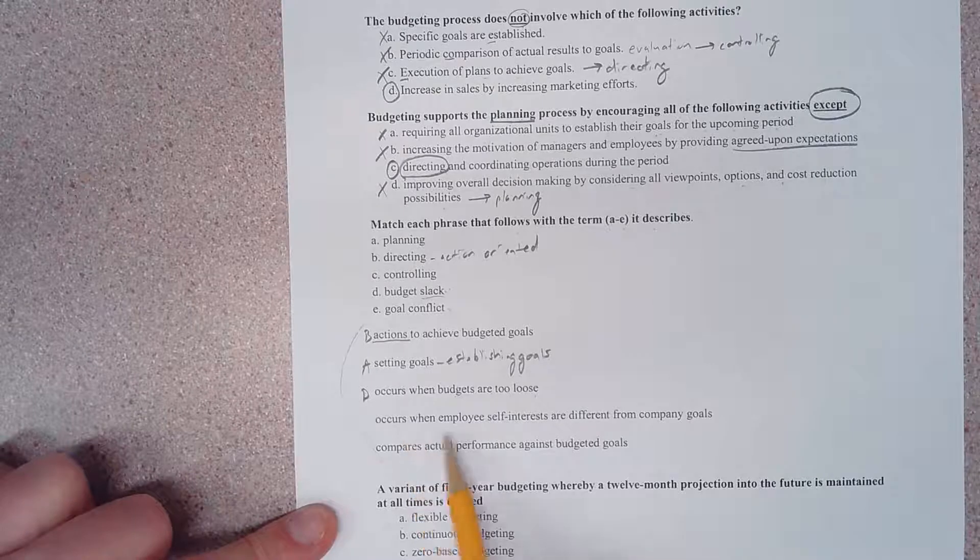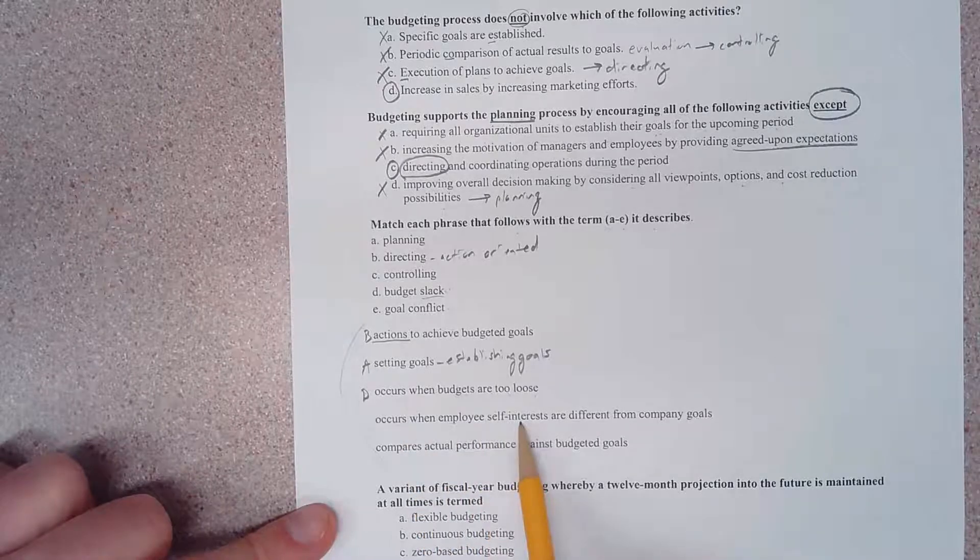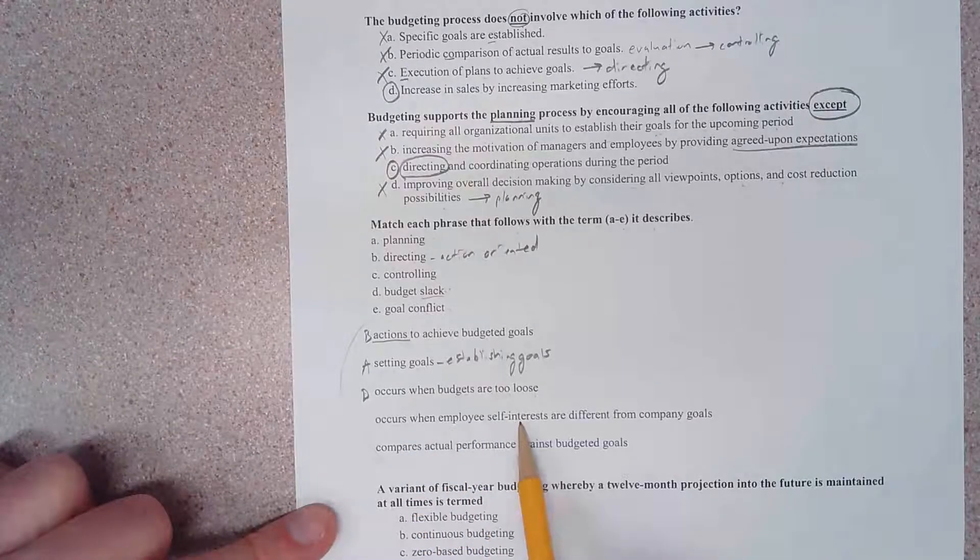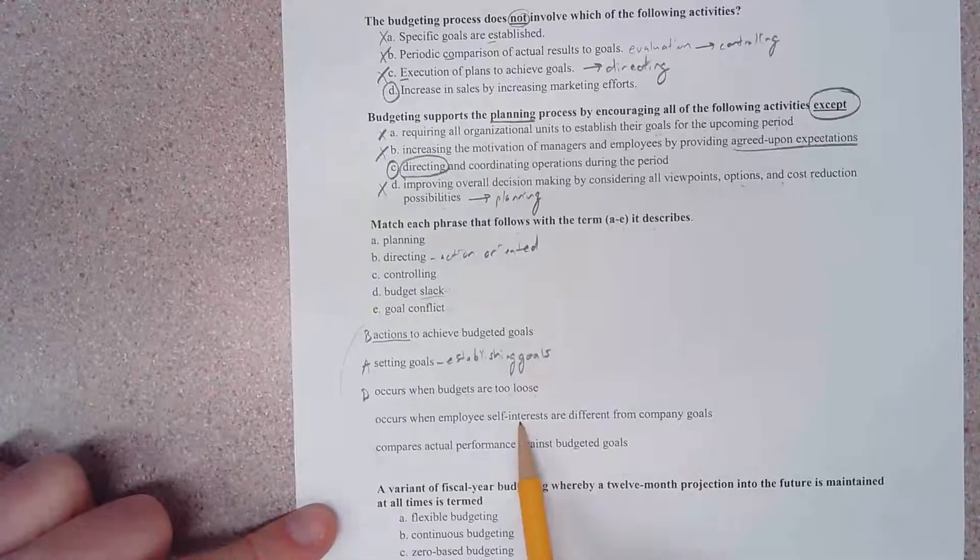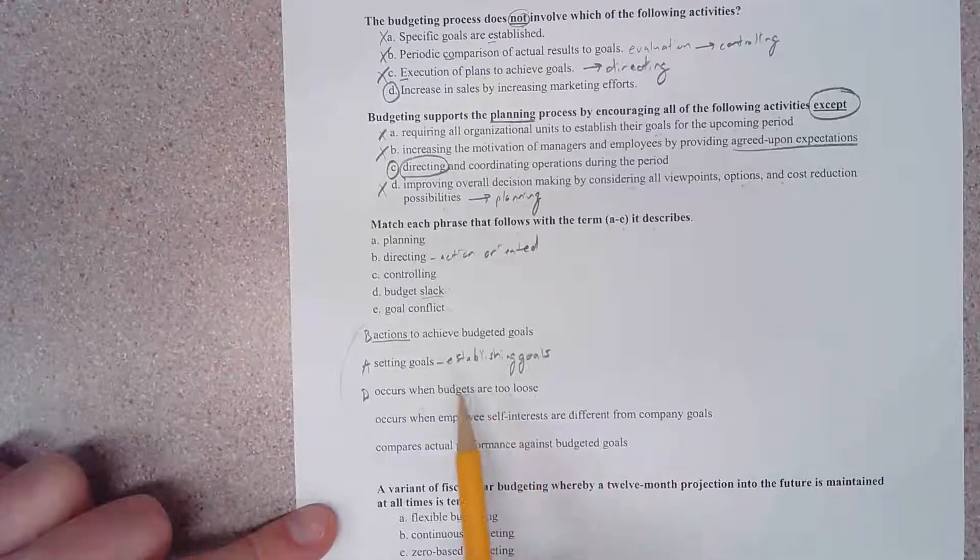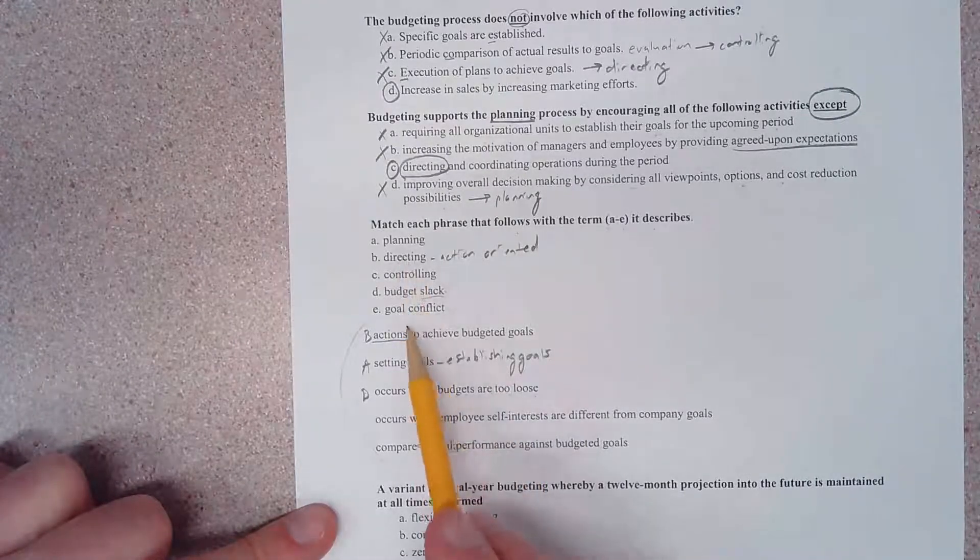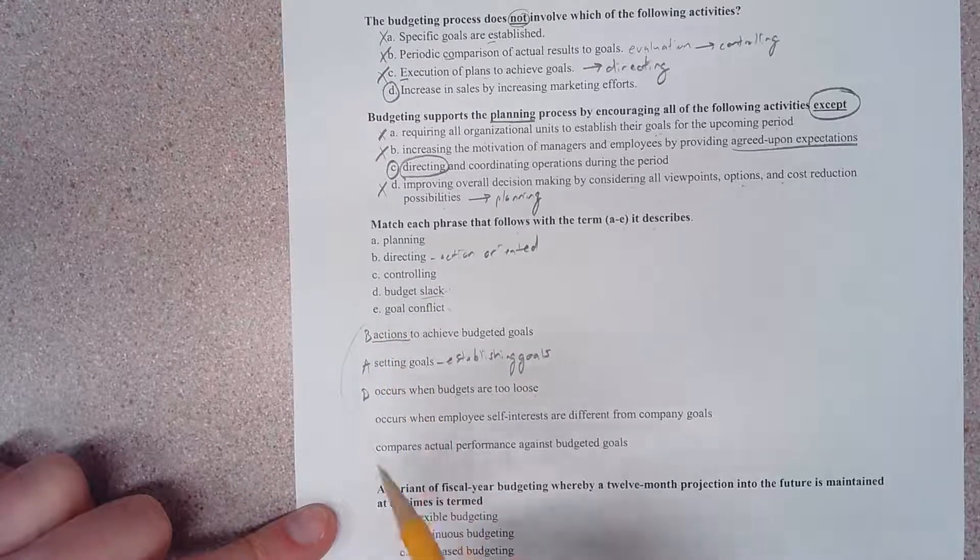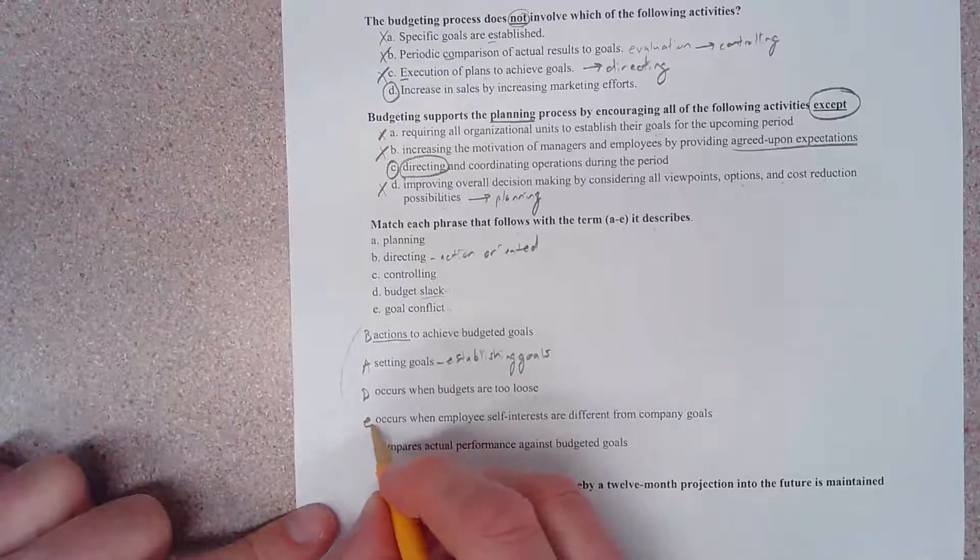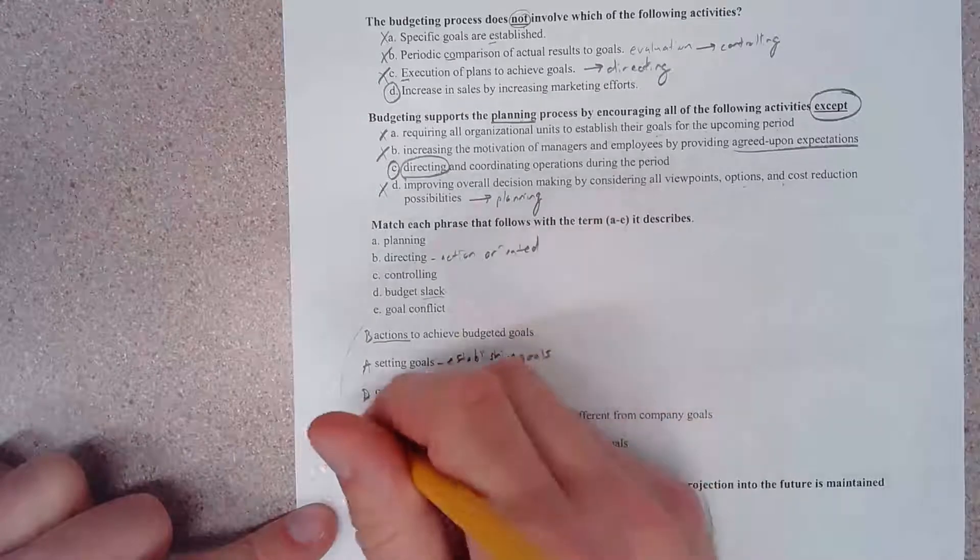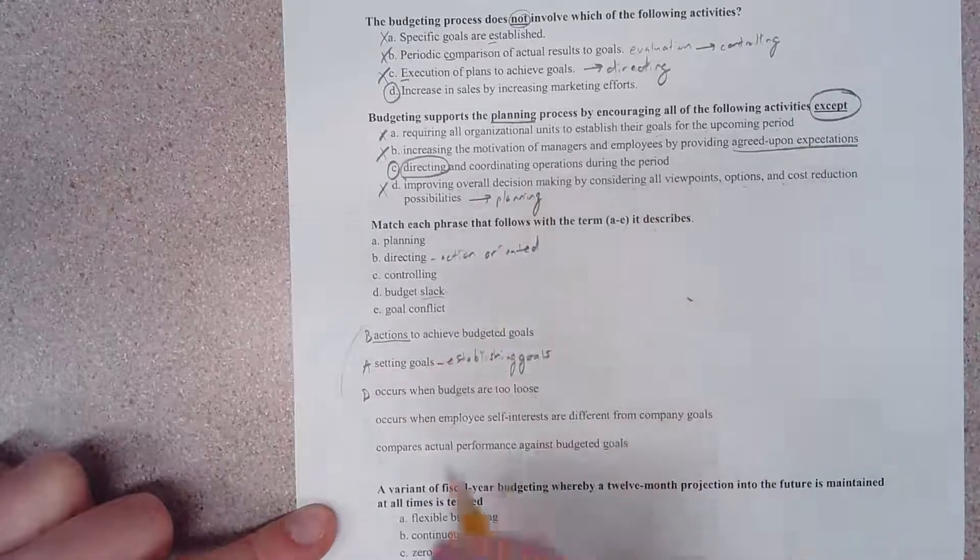Occurs when employees' self-interests are different from company goals. I believe in the presentation we called this self-conflict. We can look up here and we can probably assume that goal conflict is the answer.